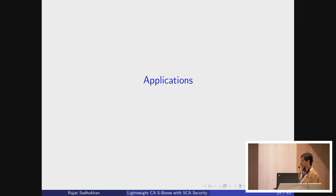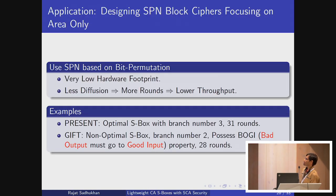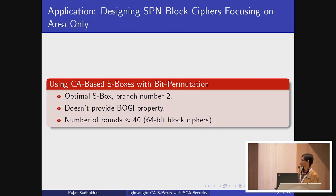We designed two applications based on this S-box. The first focuses completely on area. If the diffusion layer is less diffusive, we need more rounds, which degrades throughput. PRESENT has branch number 3, and GIFT has branch number 2, but GIFT's S-box has the BOGI property, allowing it to reduce rounds to 28. Using our S-box with bit permutation gives more rounds because we don't have the BOGI property, but this paradigm achieves the least area since permutation doesn't consume area.